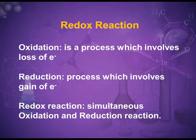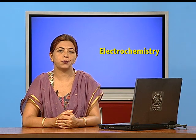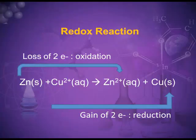Let me explain with a suitable example. Just see the slide — it is a redox reaction between zinc and copper. In the reactant side, zinc is in the solid state and copper is in the form of ions with a two-plus charge. After the reaction, zinc loses two electrons and changes into zinc ions, while copper ions gain those two electrons and are reduced to copper.